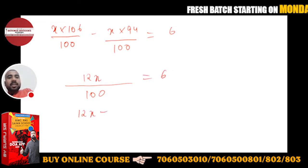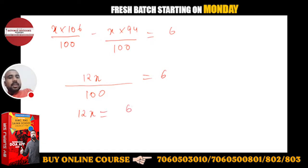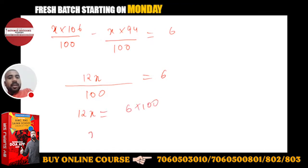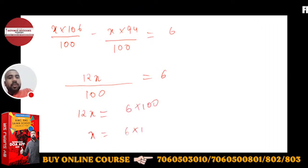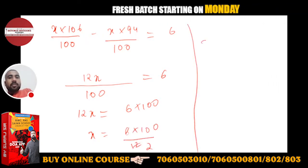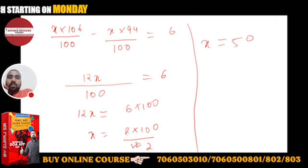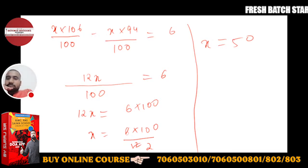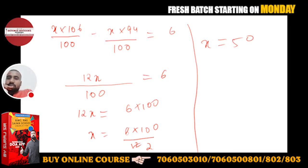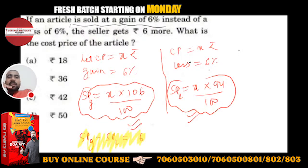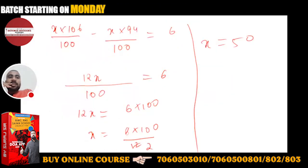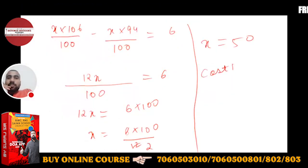12X = 6 × 100, so X = 600/12 = 50. X will be 50. Matlab cost price hai 50 rupees. Cost price is equal to 50 rupees.